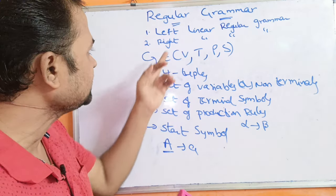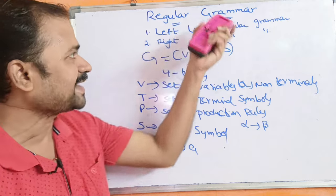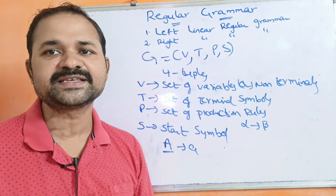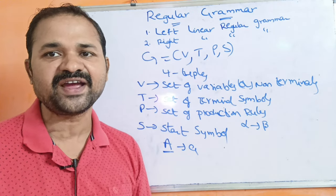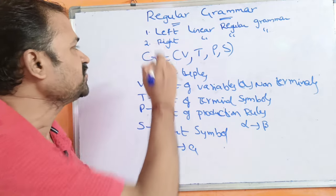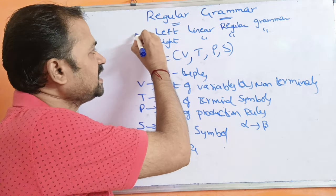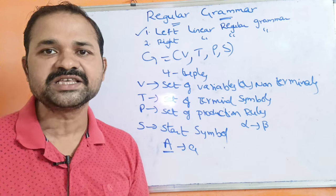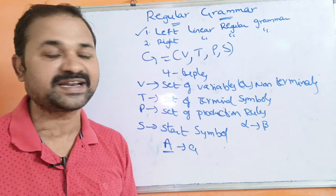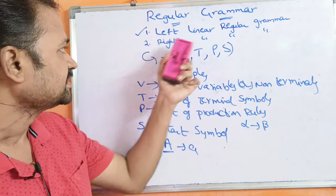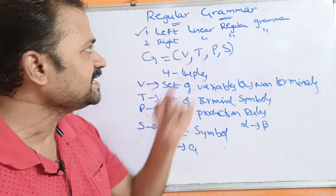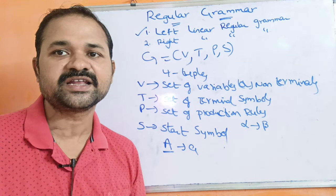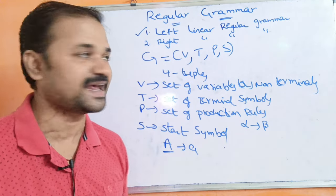Now let us see about types of regular grammar. Regular grammar is mainly classified into two types: the first one is left linear regular grammar, also called left linear grammar, and the second one is right linear regular grammar, also called right linear grammar.